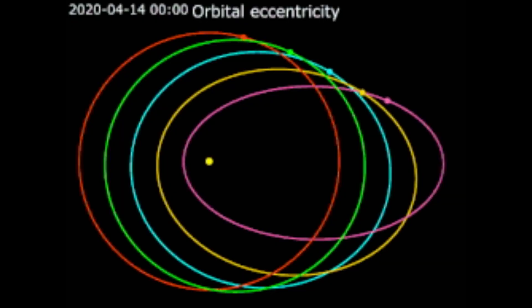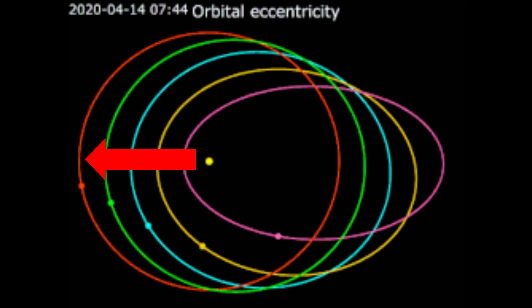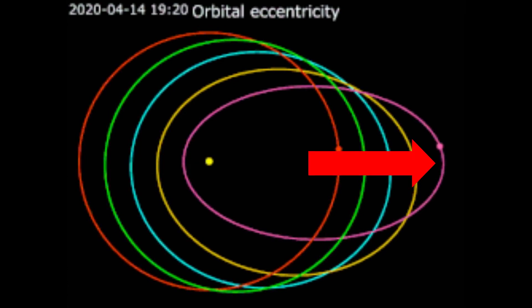Now, orbits come in different shapes and sizes, but they're all elliptical, meaning that they're oval-shaped. For some planets, this elliptical path is almost perfectly circular, but for others, they look a lot more like long, skinny ovals than a circle. The way that we define how circular or not circular these orbits are is with what's known as eccentricity.